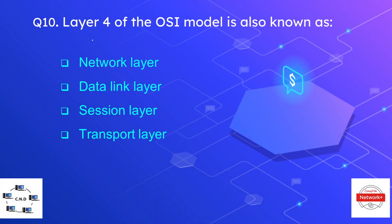Question number ten is: layer four of the OSI model is also known as — network layer, data link layer, session layer, or transport layer. The correct answer is transport layer. Network layer is layer three, data link is layer two, and session is layer five.